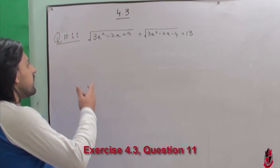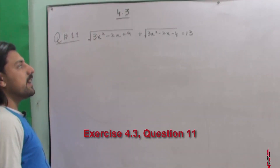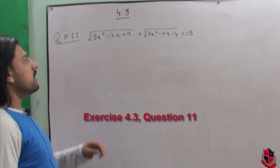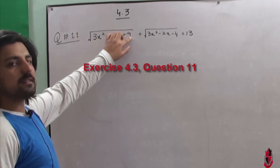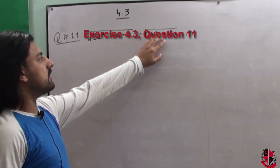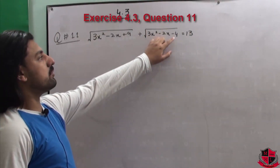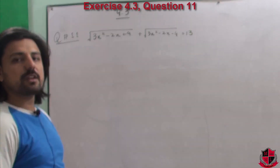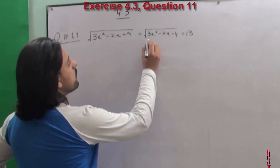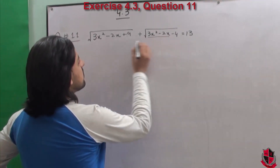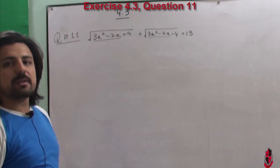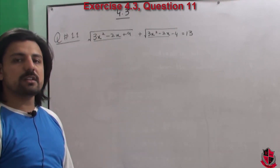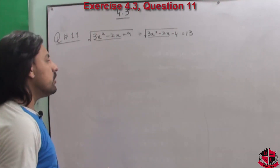Next question number 11, again of type 1. The equation is √(3x²-2x+9) + √(3x²-2x-4) = 13. If you see, 3x²-2x is the expression in the variable — both of them are the same — so it is again of type 1.